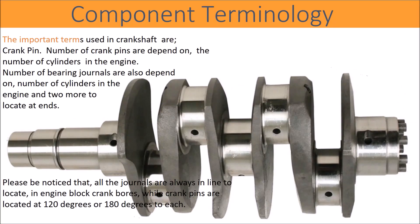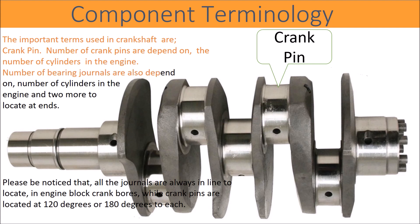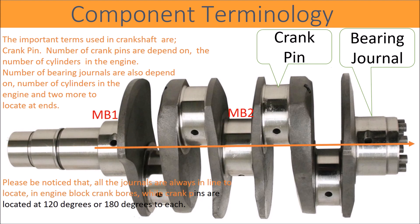The important terms used in Crankshaft are Crank Pin. The number of Crank Pins depends on the number of cylinders in the engine. The number of bearing journals also depends on the number of cylinders in the engine, plus two more to locate at the ends. Please note that all the journals are always in line, while crank pins are located at 120 degrees or 180 degrees to each other.